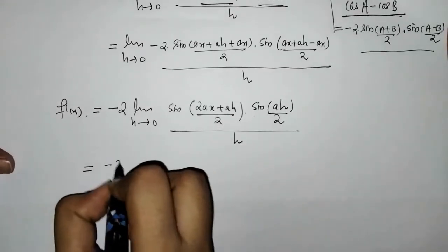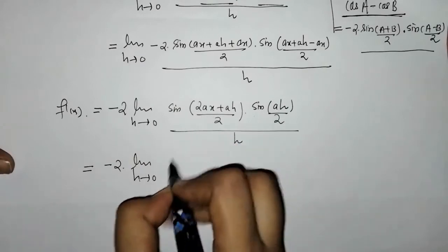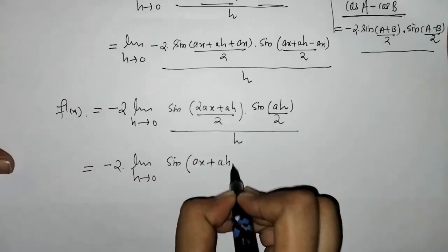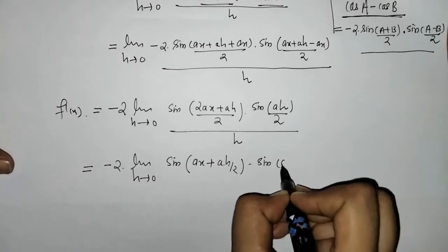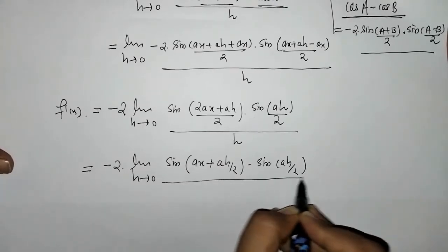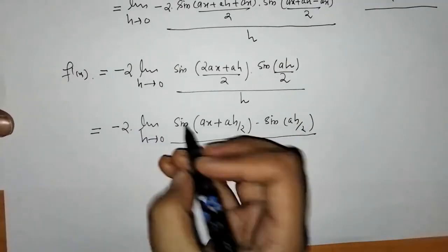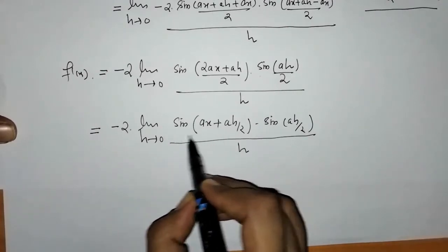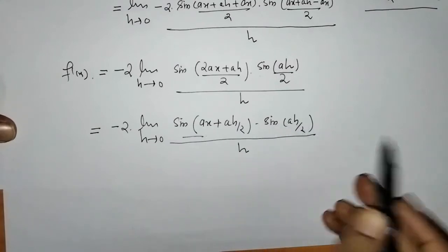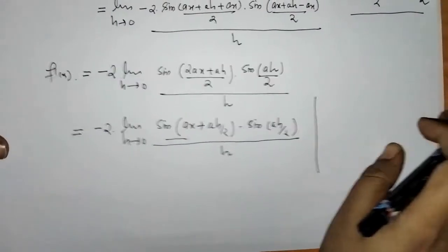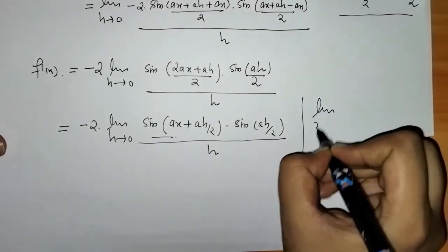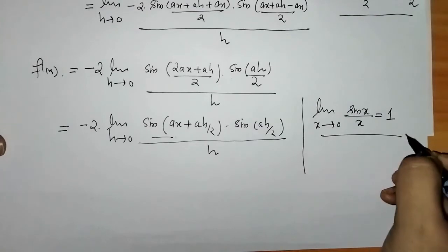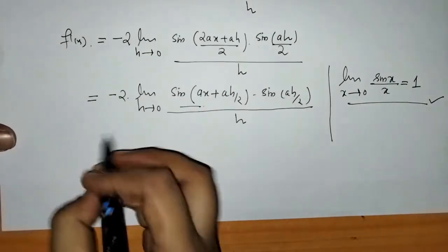Again on simplification, the ax terms cancel in the second sine factor, giving us sin(ax + ah/2) · sin(ah/2) upon h. When we put h = 0 we see that sin(ax) remains, and we need to adjust using the standard result: limit x→0 of sin(x)/x = 1.